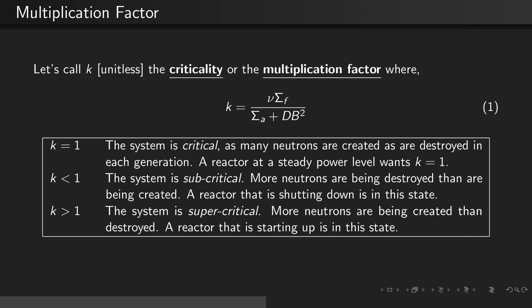When k is less than 1, the system is called subcritical. More neutrons are being destroyed than are being created. A reactor that is shutting down is in this state.